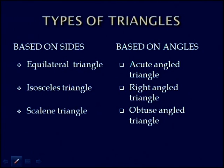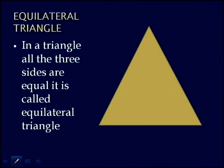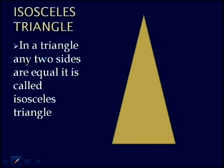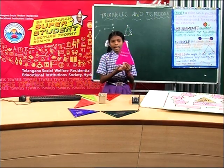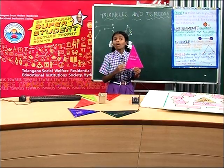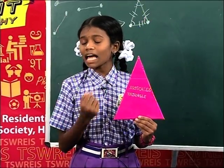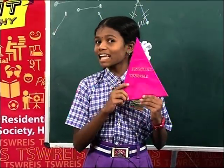The types of triangles based on sides and based on angles. Based on sides: equilateral triangle, isosceles triangle, and scalene triangle. In an equilateral triangle, all three sides are equal. In an isosceles triangle, any two sides are equal, it is called an isosceles triangle.